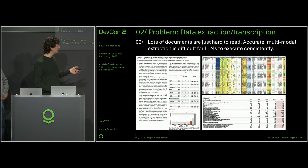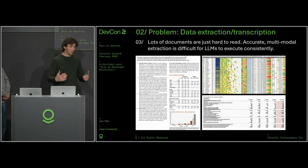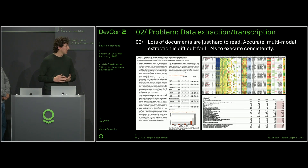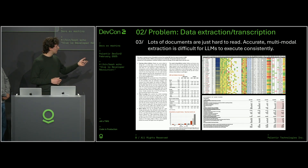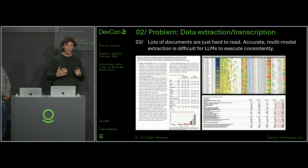We can't just give the LLM all of the information we have. A massive value-add of humans in information extraction is being able to take many disparate data sources and collate the information into one small package that can be analyzed. Providing the right information to the LLM to extract metrics is a complex piece that requires a lot of engineering effort. And even if you get the right context and right data, sometimes it will still fail when analyzing complex spreadsheets or charts.